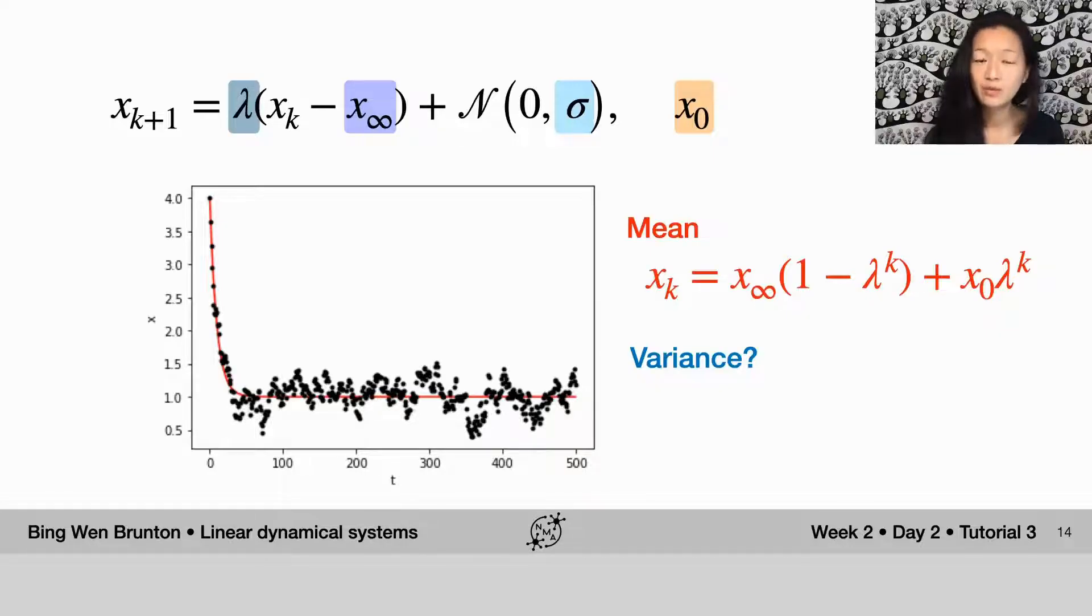The random walk process is trying to increase the variance of the solution, and it does. But then we have this deterministic part, this lambda here, which is less than one, that's trying to bring it back. It has a decaying effect, right? So it's trying to bring it back towards x infinity.